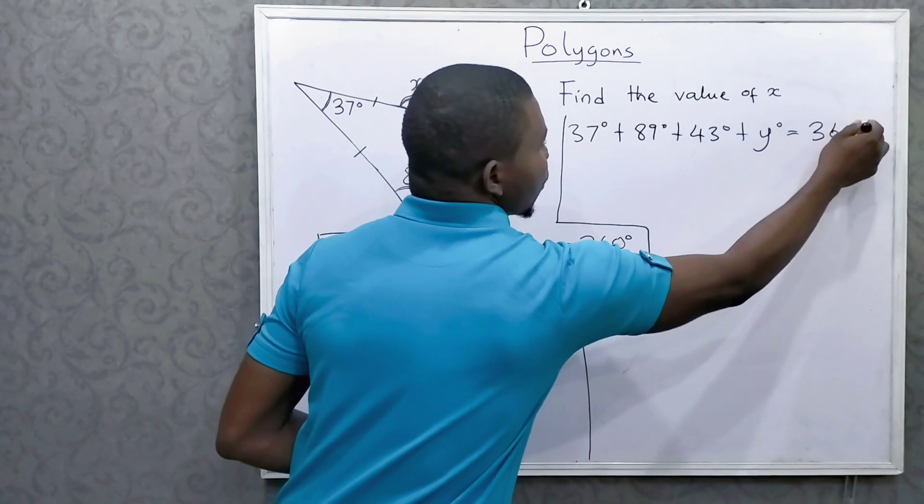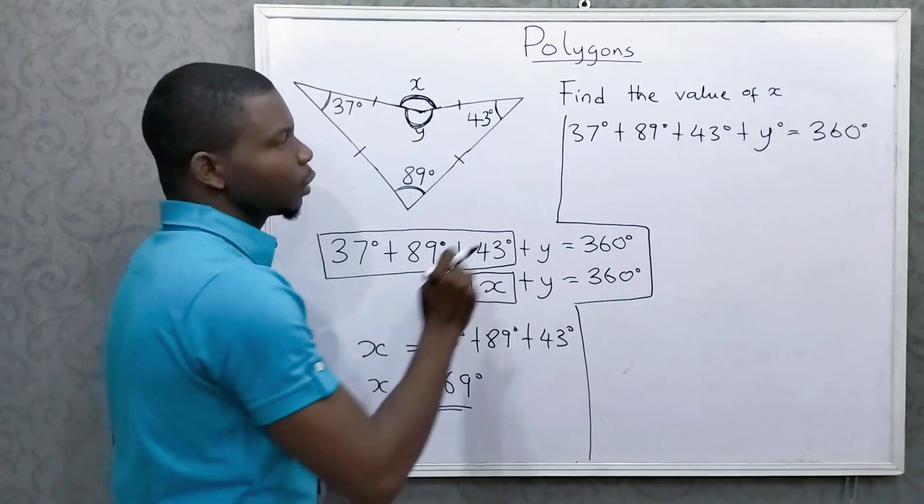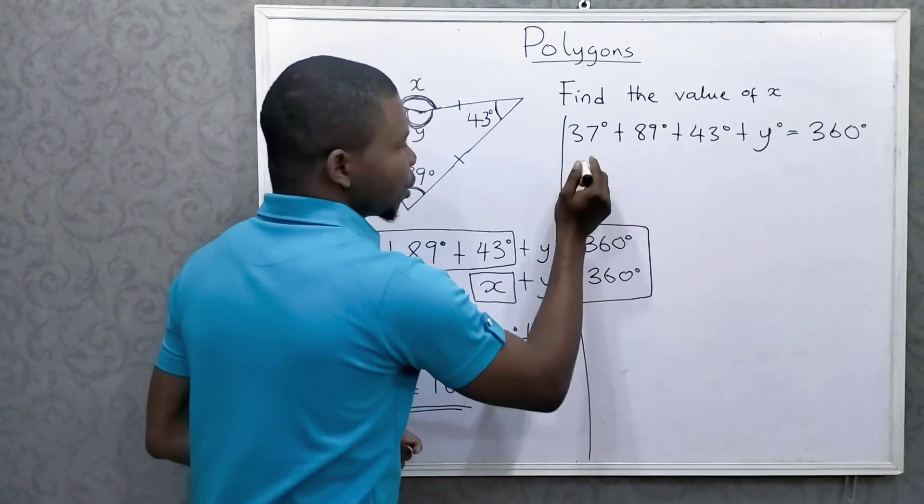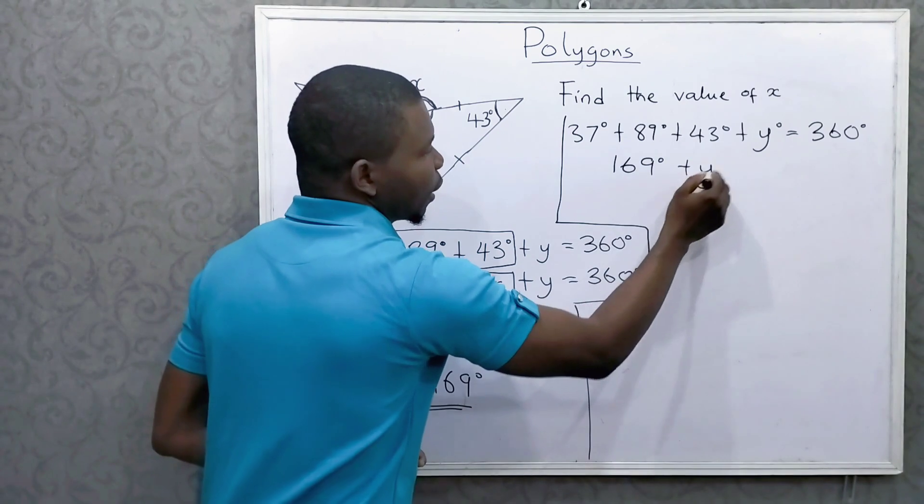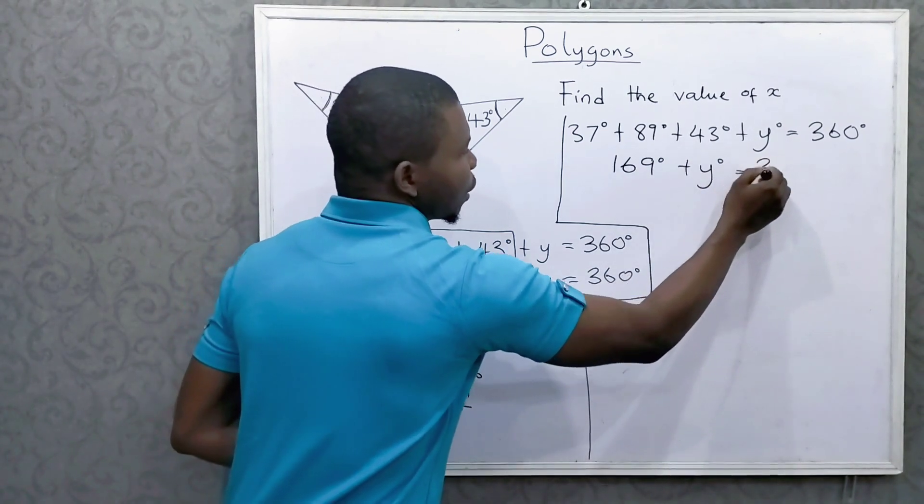That is the sum of angles in a quadrilateral. So when you add up this, you get 169 as well. 169 plus y is equal to 360.